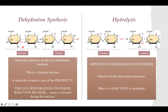In dehydration synthesis, you have an OH and an H combining — H2 plus O — producing that extra water molecule. The polymer is broken down into monomers through hydrolysis, which looks almost like a mirror image of dehydration synthesis. Dehydration synthesis adds together; hydrolysis takes things apart. In dehydration synthesis, water is a product; in hydrolysis, water is a reactant — it's on the left side.